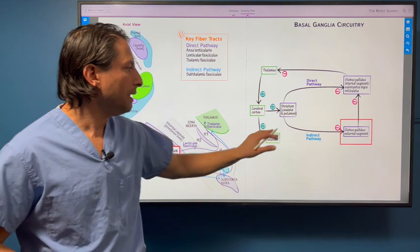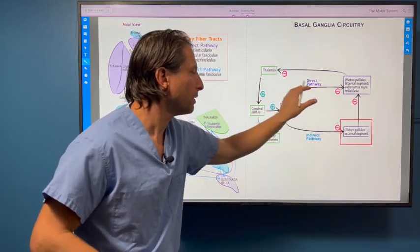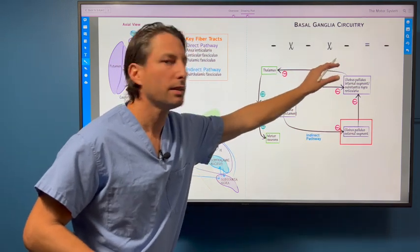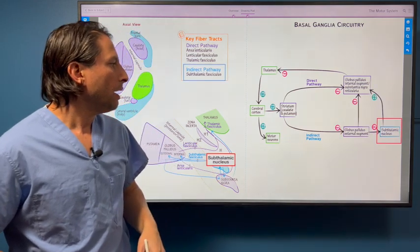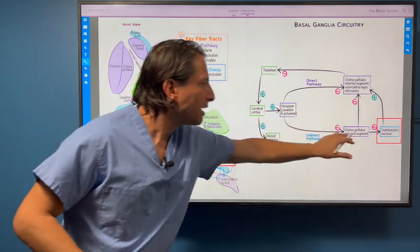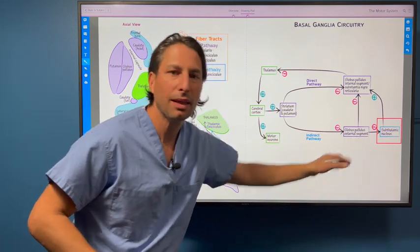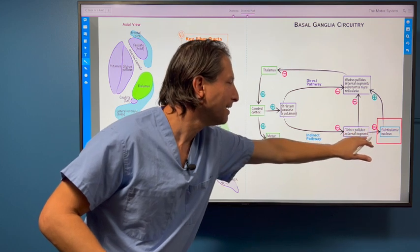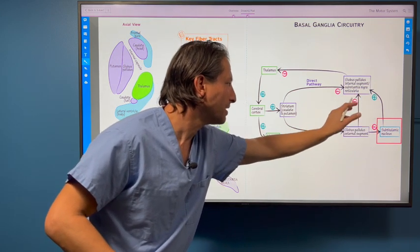In contrast, with the indirect pathway, you have inhibition of this circuitry. Overall, you have three inhibitory signals and it's thus overall inhibitory. There's also this extra loop that the indirect pathway has that goes through the subthalamic nucleus. It has the same end effect because it has inhibition just through a different channel.